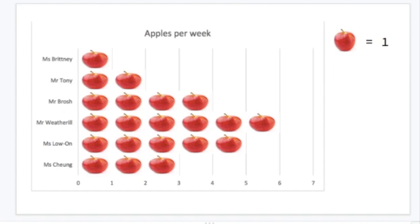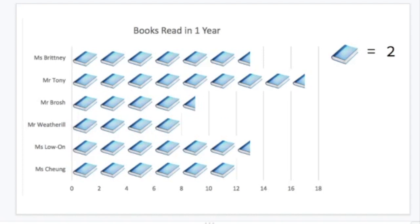Let's look at a different example. Again I've made this up. This shows how many books were read in one year. But this time one picture of a book does not represent one book. One picture of a book represents two books.